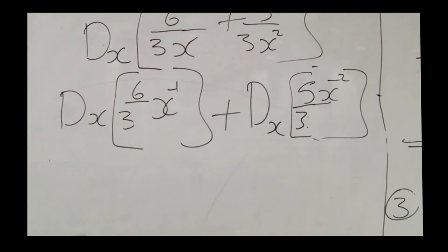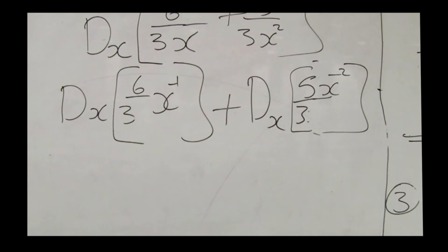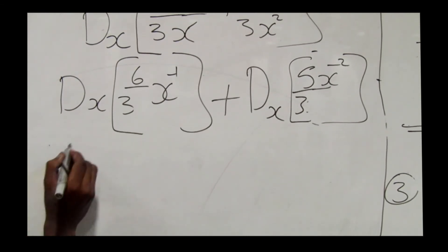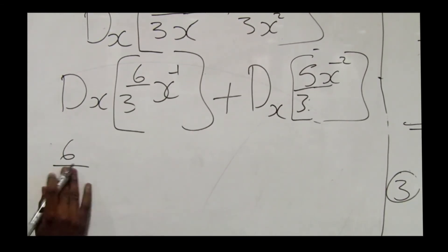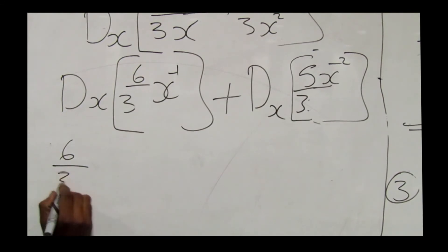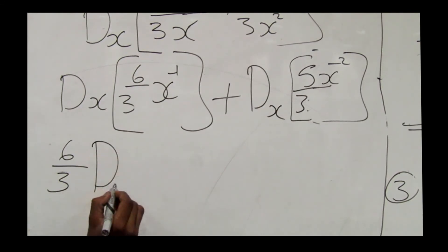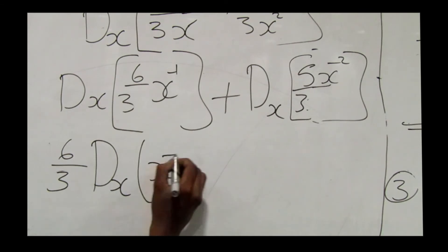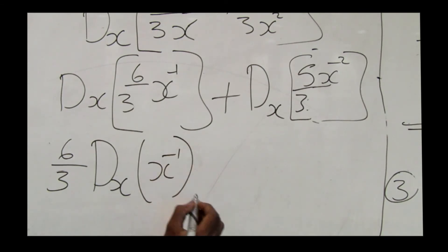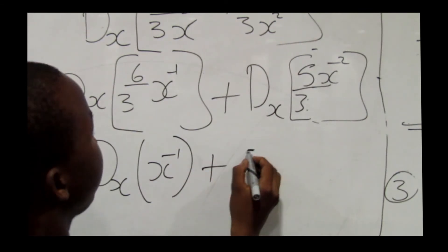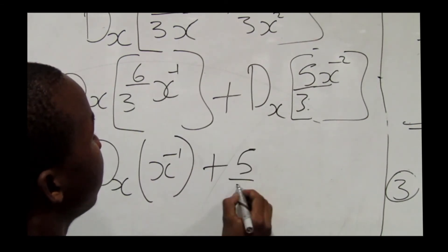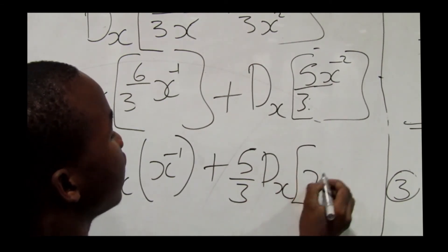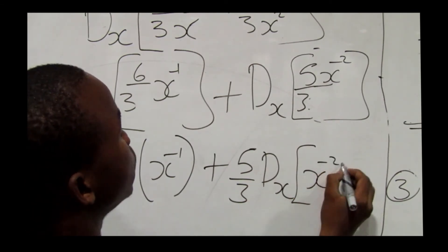Taking the constants outside and differentiating: we have 6 over 3 times d/dx of x to the power negative 1, plus 5 over 3 times d/dx of x to the power negative 2.